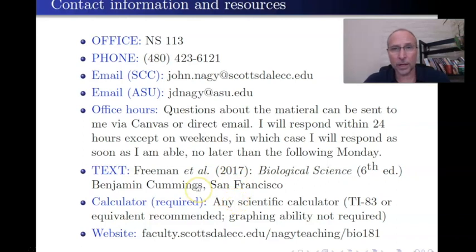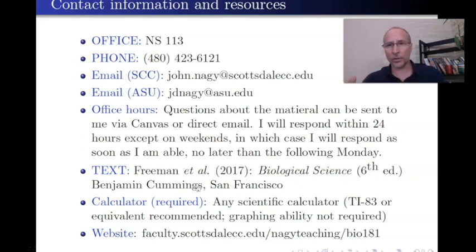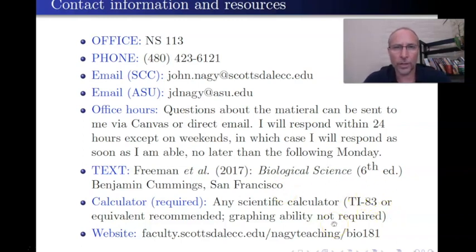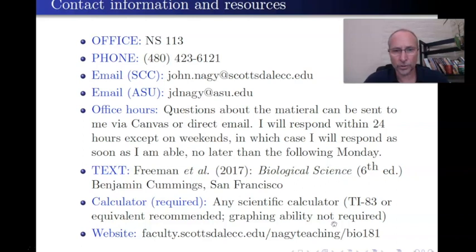Another thing you're definitely going to need is a scientific calculator. The calculator must be able to do two things: logarithms and exponents. If you want to get one of the TI-83 series or TI-80 series, that's perfectly fine and absolutely allowed in this class. That model is slightly over $100, but you don't necessarily have to spend that much. You can get a perfectly good Casio scientific calculator for $12 online at Amazon or other locations.